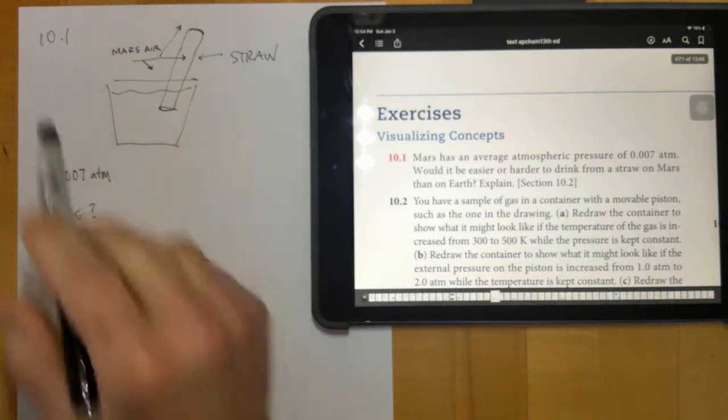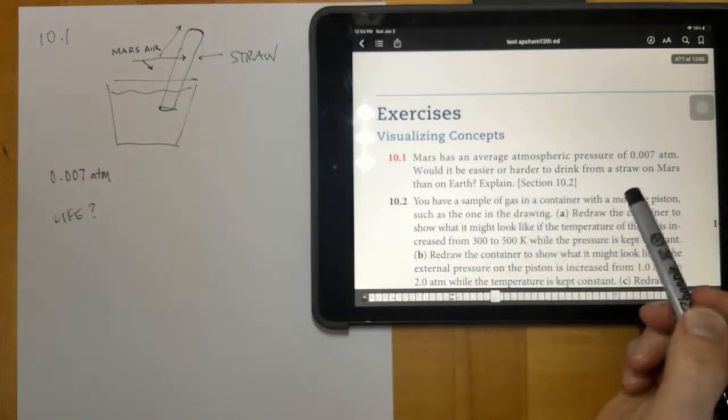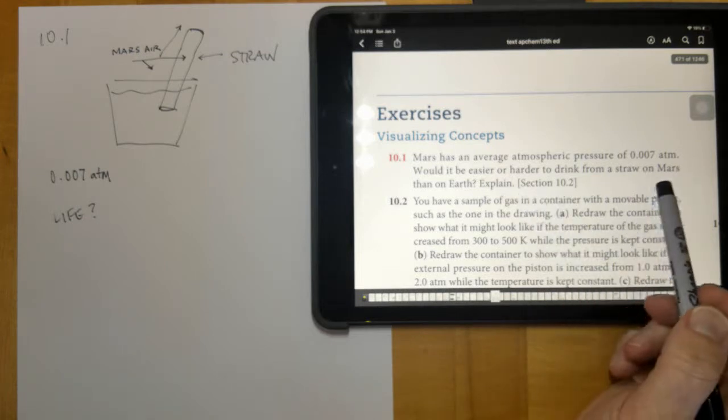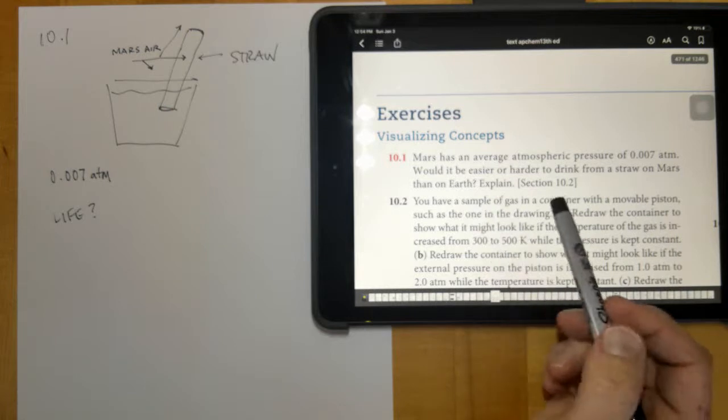This is problem 10.1. Mars has an average atmospheric pressure of 0.007 atmospheres. Would it be easier or harder to drink from a straw on Mars than on Earth? You should explain.